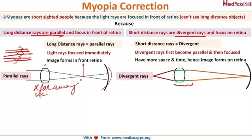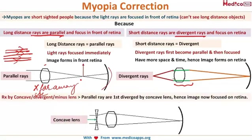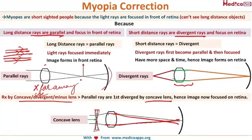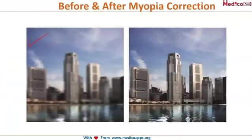The modality of management is to diverge the rays. All concave lenses diverge light rays, so placing a diverging concave lens in front of the cornea will diverge the parallel rays entering the eye. After entering the eye they start becoming parallel and then get focused on the retina, avoiding premature convergence. That is the physics behind the correction of myopia with a concave lens.